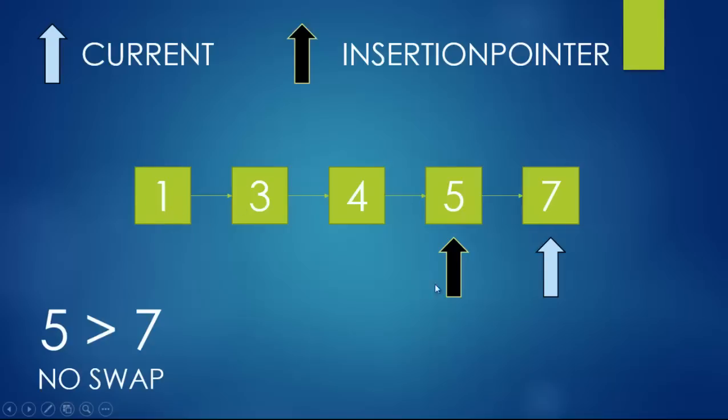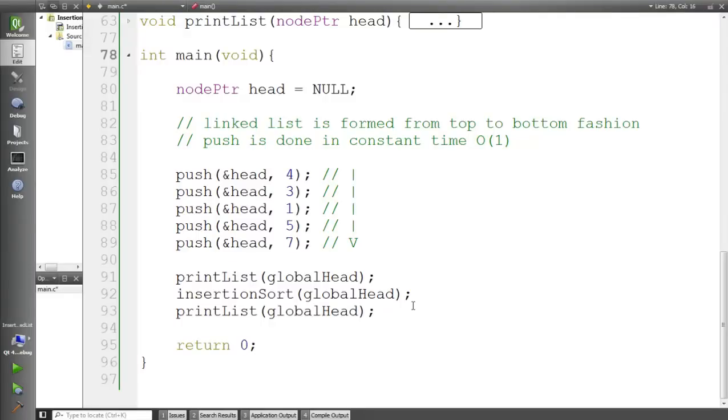We move through the entire list checking if we can fit seven anywhere, but we can't because seven is the largest element. That is how this entire algorithm works. If you thought that because this is a linked list it would work differently than in an array — it doesn't. It works the same. Let's look at the code now.